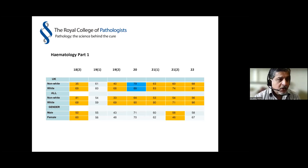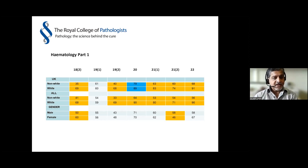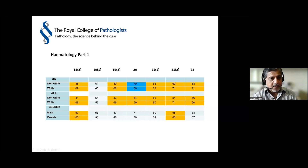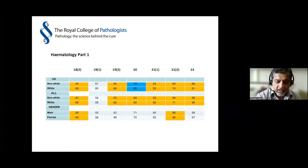Moving on to hematology - there's a lot of amber here. The hematology Part 1 comprises MCQs and essays, so a lot of writing-type assessment, and it seems almost consistently that non-white candidates perform much worse than white candidates, both in the UK and overall. That's something we'll definitely need to look at, taking account of other factors that may be contributing.